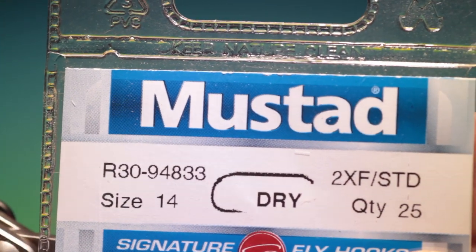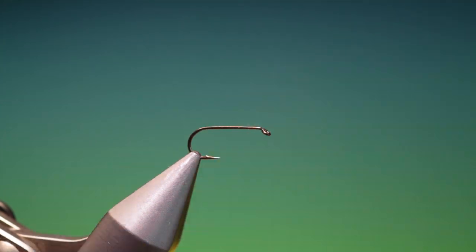We'll start with the Mustard R30, size 14 dry fly hook. We've got Shear 14-0 olive thread.